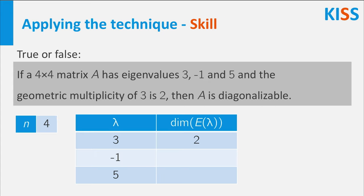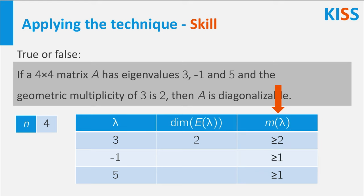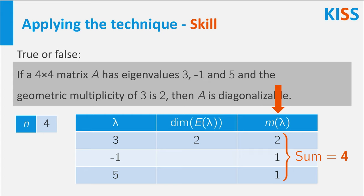Now you can use your skill to execute the plan of attack. Let's start with the eigenvalue of 3. The geometric multiplicity of 3 equals 2, so you know for sure that the algebraic multiplicity of 3 is at least 2. The algebraic multiplicity of the other two eigenvalues is at least 1, because otherwise they would not be eigenvalues of A. If you add these algebraic multiplicities together, you have a sum of at least 4. But the characteristic equation of A has exactly 4 solutions, so this sum must be exactly 4. This means that for each eigenvalue you must take the lowest possible algebraic multiplicity, which gives you the values 2, 1 and 1.